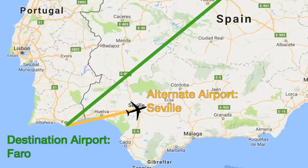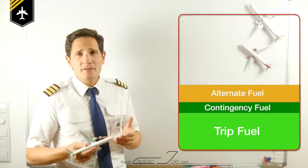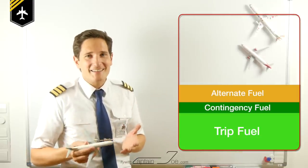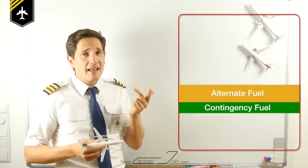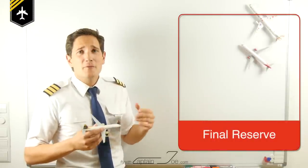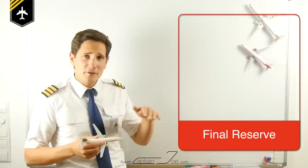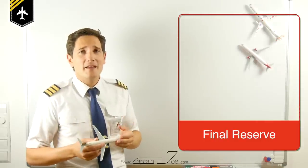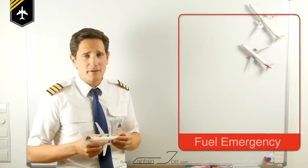Now you're on approach to Sevilla and the tower controller says: 'Air Joe 125, go around — the runway is blocked because the runway inspection car has just broken down.' So let's recapture: the trip fuel is used up, the contingency and the alternate fuel too. What's left? There's the so-called final reserve fuel, which is regulated by law and must be a minimum of 30 minutes flying time at 1,500 feet over the aerodrome at holding speed. So Sevilla has 30 minutes to clear the runway, and you will be number one for approach because you will have declared a fuel emergency as soon as you start using the final reserve fuel.